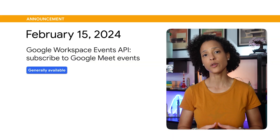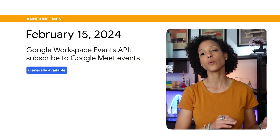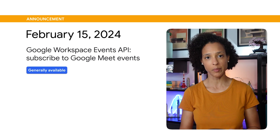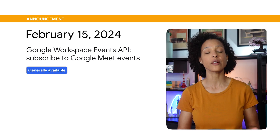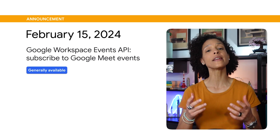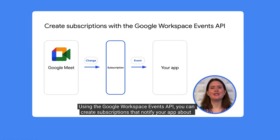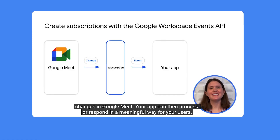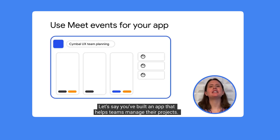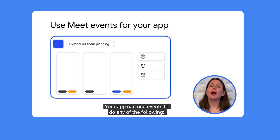The ability to subscribe to Google Meet Events through the Google Workspace Events API has also graduated from the Developer Preview Program and is now generally available. The Google Workspace Events API lets you subscribe to meeting spaces and users. My colleague Allison made a video about how you can use this API to be notified when a relevant event occurs. I recommend you watch it to learn more.